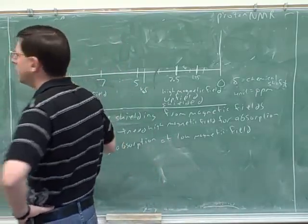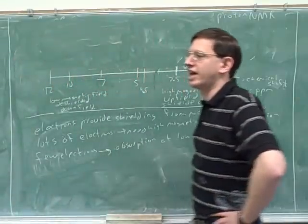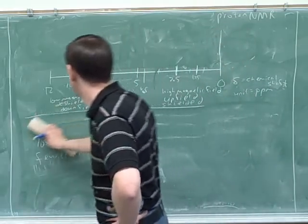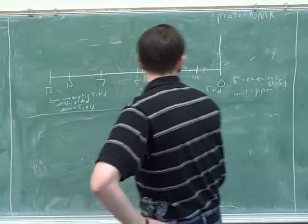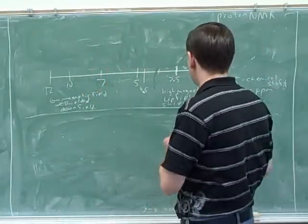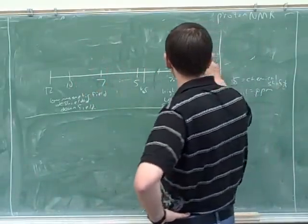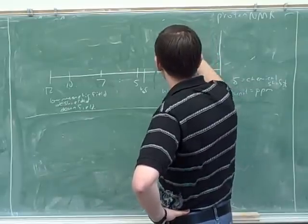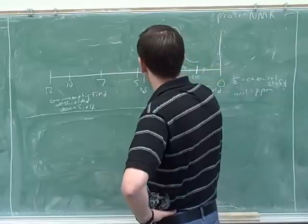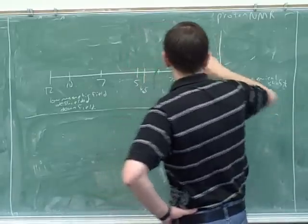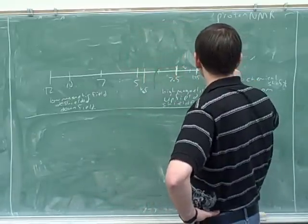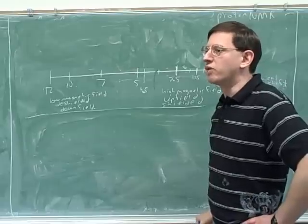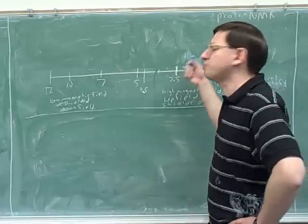Yeah, the third type of information you get is the integration information, which tells you basically how many hydrogens. You know the total number of hydrogens, but we also have to ask how many hydrogens does each peak represent?